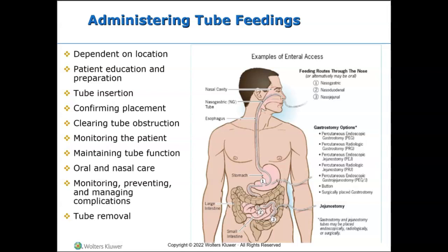Original placement is confirmed by x-ray, and subsequent placement is confirmed typically with litmus paper. To clear a tube obstruction, use the push-and-pull technique: fill a 50 milliliter syringe with warm water, connect it to the tube, and push and pull on the syringe like a bicycle pump to try to dislodge the blockage. This could take up to 30 minutes. If this doesn't work, administer an enzymatic agent or a mechanical device like a tube-clearing system. We might also administer Coca-Cola, meat tenderizers, or acidic juices to help deteriorate the blockage.